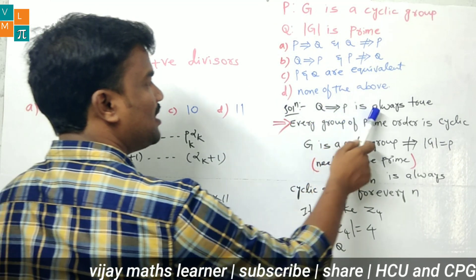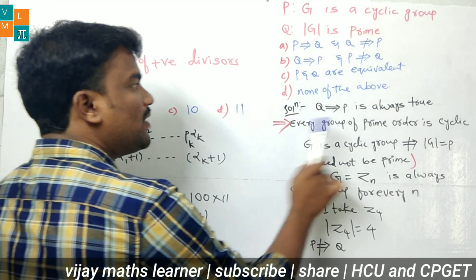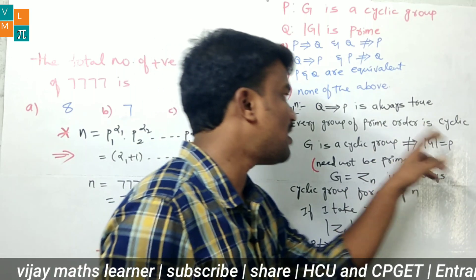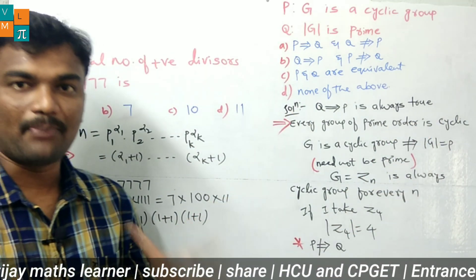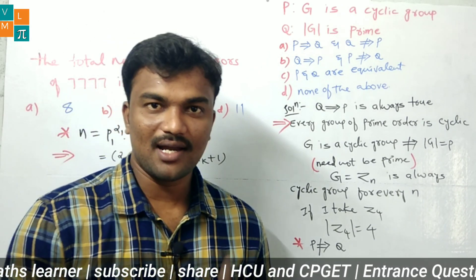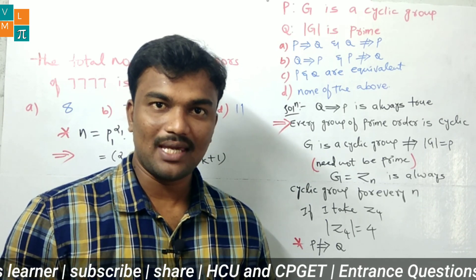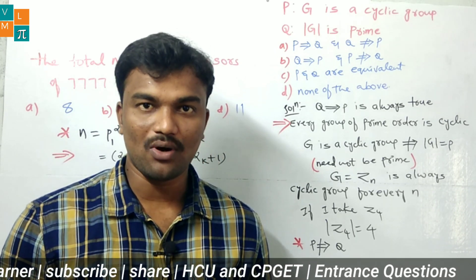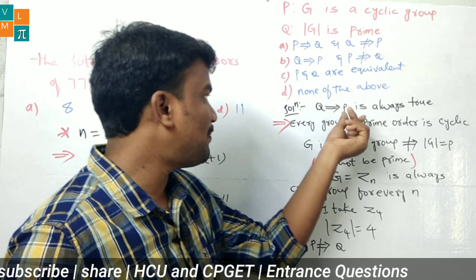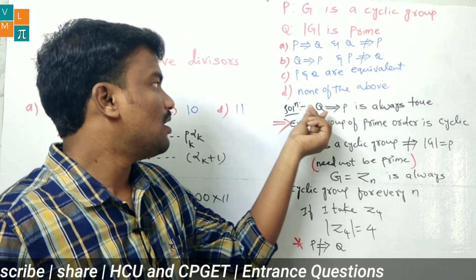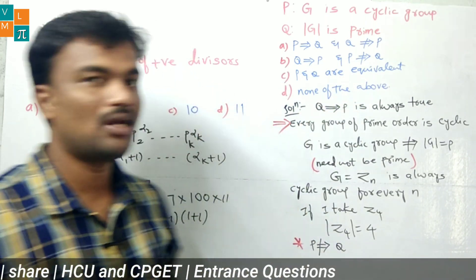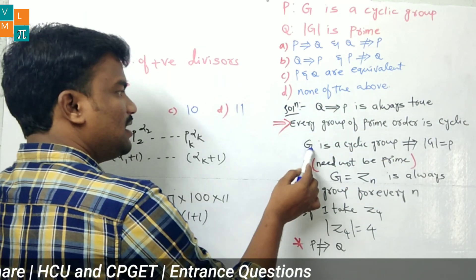Q implies P is always true by theorem: every group of prime order is cyclic. What is Q? |G| is prime, meaning the order of the group is prime. If the order of the group is prime, then it is always a cyclic group. So Q implies P is always true.